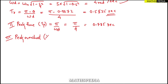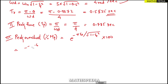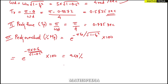Percentage peak overshoot M_p = e^(−π·zeta / √(1 − zeta²)) × 100. Substituting zeta = 0.6: M_p = e^(−π × 0.6 / √(1 − 0.6²)) × 100 = 9.48%.